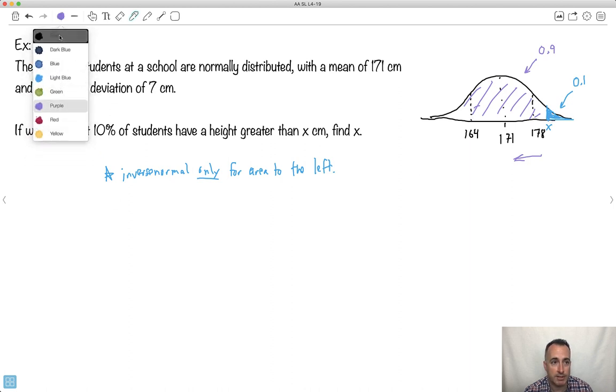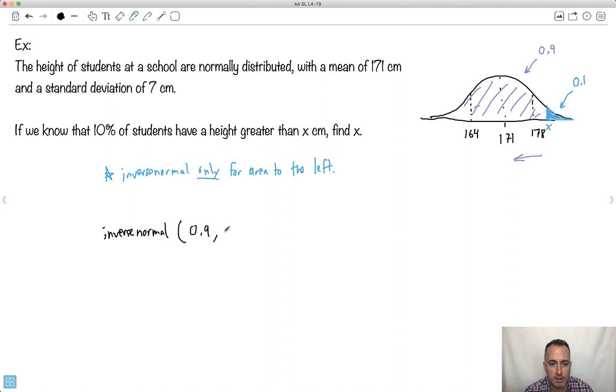Okay, I'm going to do inverse normal. And I'm going to give it the area. So I'm going to say it's 0.9. I'm going to tell it the mean is 171, and the standard deviation is 7. And I'll just make sure I label what everything is. This right here is the area. That was the key part here. This here is the mean. This here is the standard deviation. Let's see what my calculator tells me.